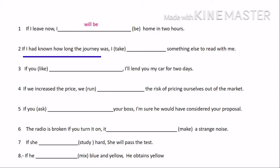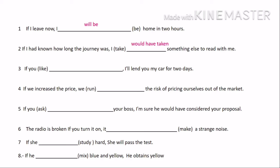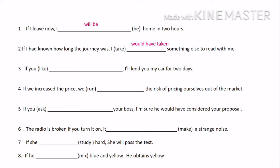If I had known how long the journey was — that's the first part. I have to check the verb: 'had known' is in past perfect. Which conditional uses past perfect? Third conditional. The third conditional has past perfect in the first part, and 'would have' with the verb in past participle in the second part. 'Take' — take, took, taken — past participle is 'taken'. So that's a third conditional.